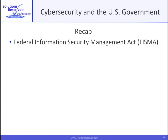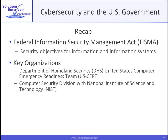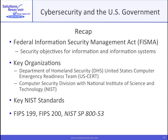Recapping, we've looked at FISMA, under which security objectives for information and information systems were defined. We've noted some key organizations, notably DHS, US-CERT, and NIST. After introducing some of NIST's cybersecurity standards, we covered FIPS 199, FIPS 200, and especially NIST SP-853 in some detail. We concluded with introductions to FedRAMP and trusted internet connections. In part three, we'll look at cybersecurity and national security systems, of which DOD systems are a part. There's more information on the Solutions Reservoir website. See you in part three!